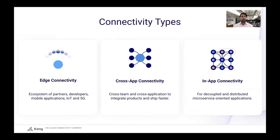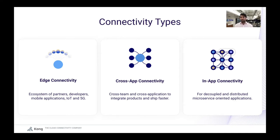Our application teams should not be in charge of managing that connectivity by themselves. When they do it, they do it in a fragmented way and it's not their job. They should instead be getting that connectivity from the infrastructure that we, the enterprise architects, are provisioning for them across Kubernetes and virtual machines, across multiple clouds and multiple clusters. There are different connectivity types that our application teams are going to be asking us for — they want connectivity at the edge when some of their applications must be consumed from outside of the organization by an ecosystem of partners, developers, or mobile applications.